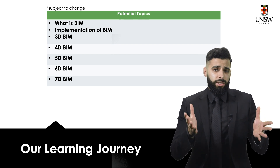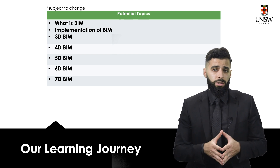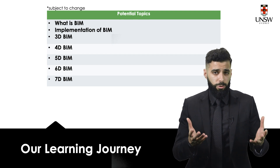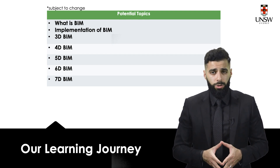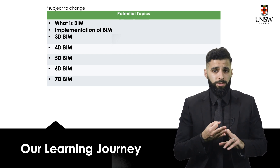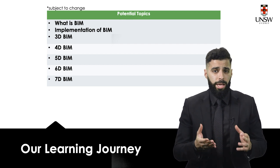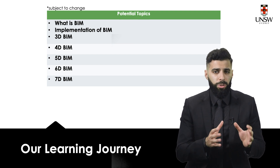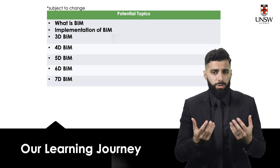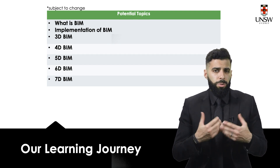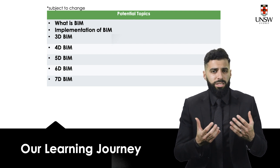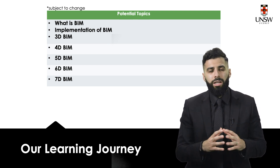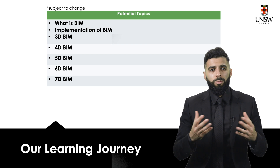The course is structured around the concept of the dimensions of BIM. We'll cover several dimensions including 3D BIM, 4D BIM, 5D BIM, 6D BIM, and 7D BIM. Each dimension represents a specific application of BIM. BIM dimensions are not about visualizing 4D or 5D — they are based on the type of information utilized for a specific application.